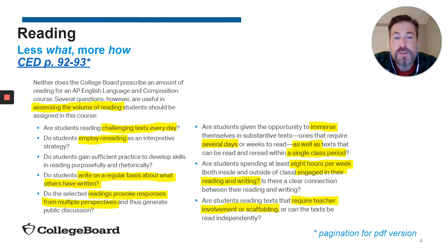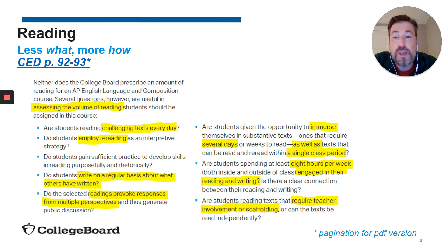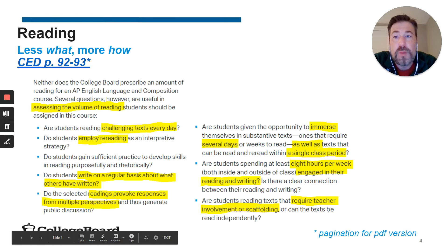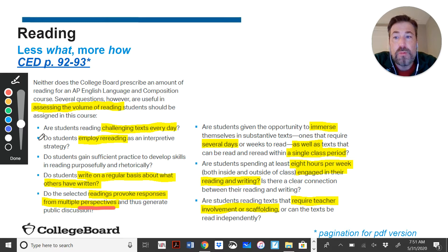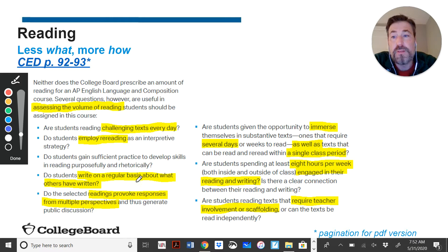When we talk about reading in the CED — if you're looking at the PDF, it's pages 92 and 93 — these are the hints or requirements from the College Board. There are no texts specifically indicated in our course. Notice the level of sophistication for the writing: they're reading challenging texts every day, reading that provokes responses from multiple perspectives. These are things we need to look for when talking about texts in our course, and they all require teacher involvement or scaffolding. It's not something kids should be able to do on their own — they're actually going to need us as well.